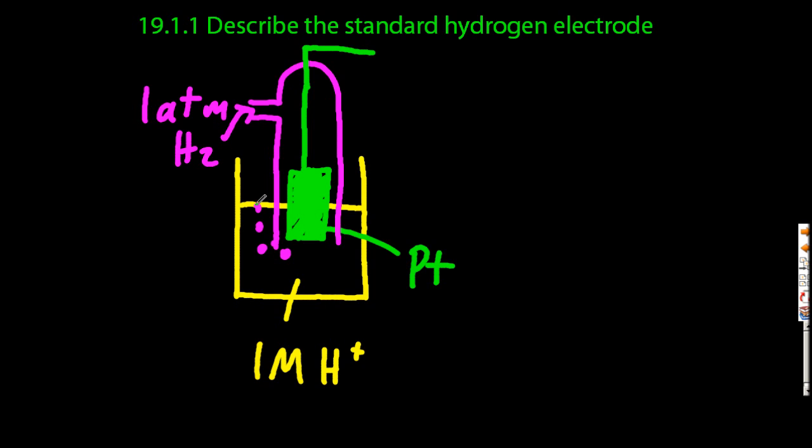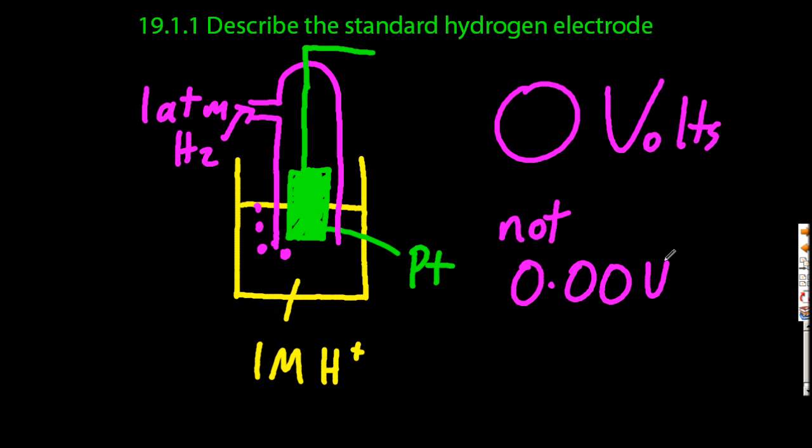Now once you've created that, that by definition has zero volts, but if you look in the IB data booklet, it isn't zero volts, it's 0.00 volts, which is different to zero.